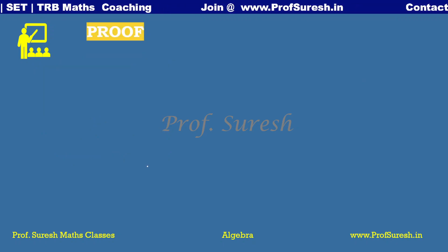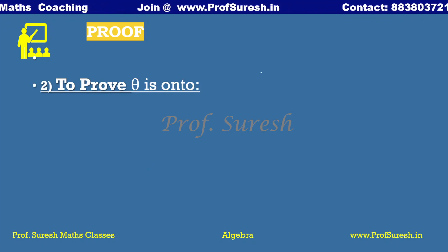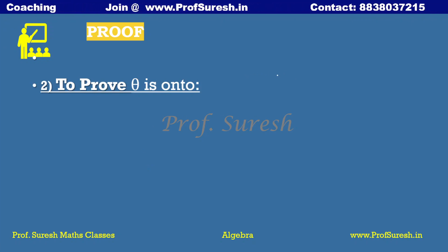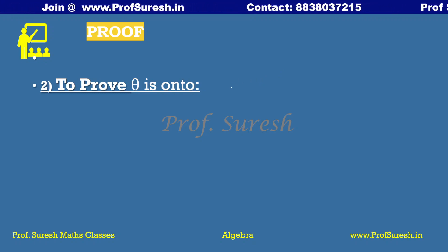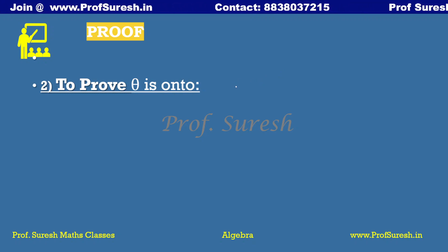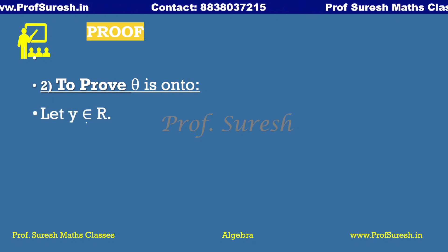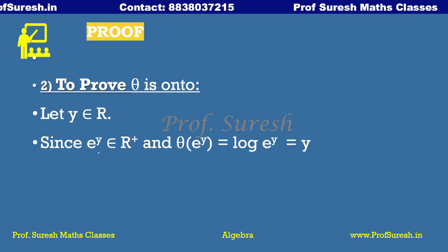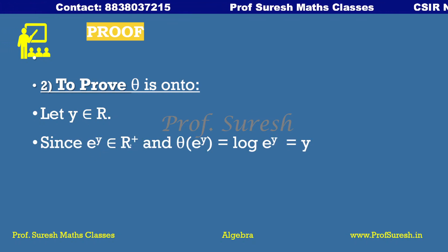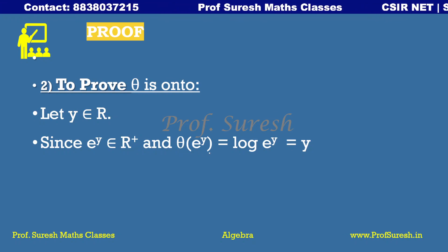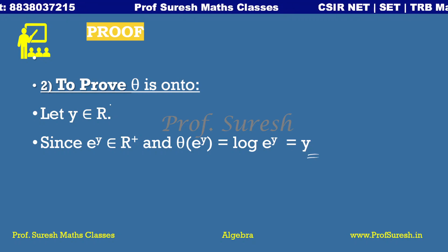Step 2: theta is onto. To show theta is onto, every element in the codomain must have a pre-image. Take any y in R. Since e to the power y belongs to R plus, e to the power y is in the domain. And theta of e to the power y equals log of e to the power y equals y.